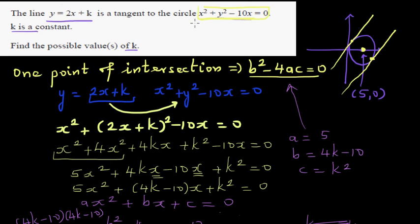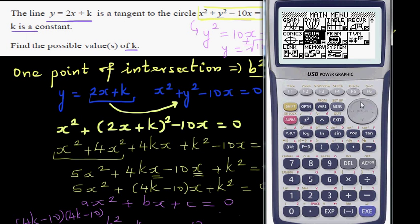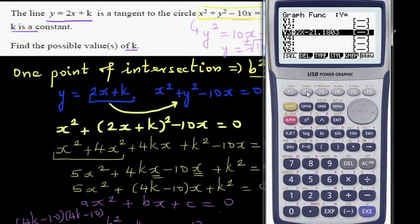To understand this graphically: rewriting the circle equation, y squared equals 10x minus x squared, so y as a function of x is plus or minus the square root of 10x minus x squared. Let me show this on a calculator. Going to graph, entering the function with the square root of 10x minus x squared.